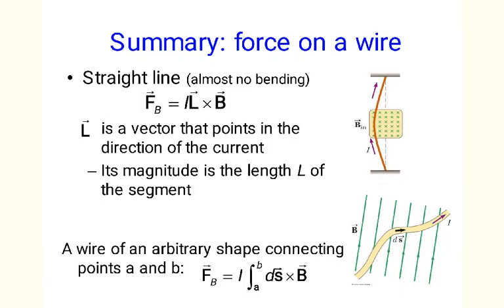To summarize, magnetic force on a nearly straight wire with almost no bending is equal to I times l cross B, and a force on a wire of an arbitrary shape connecting points A and B is obtained by integration of ds cross B along the full length of the wire.